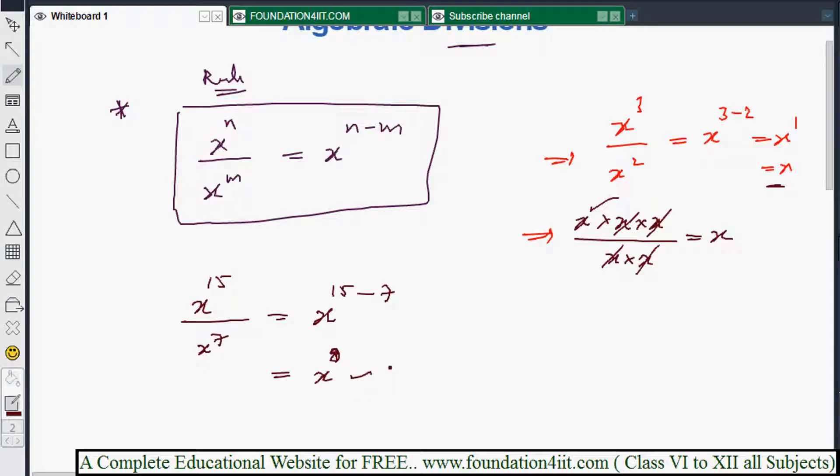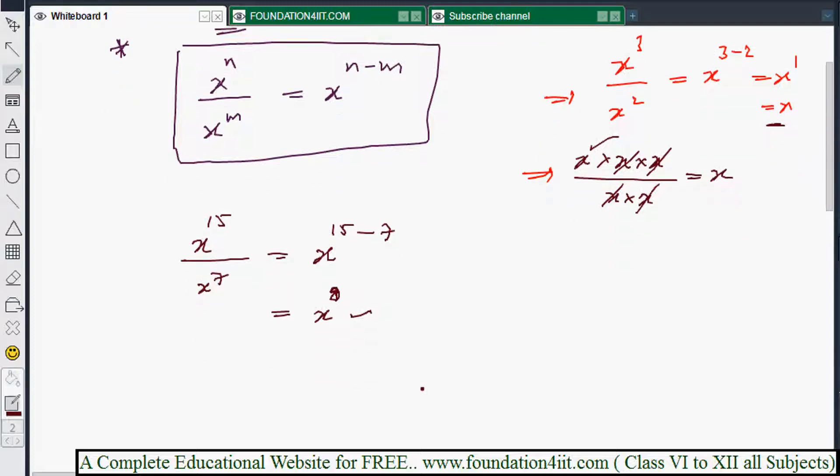Even if the numerator is small or lesser than the denominator, the same process applies. See this example: x to the power 2 by x to the power 3. Then you can write x to the power, numerator power is 2 minus denominator power is 3, so x to the power 2 minus 3, which is x to the power minus 1. x to the power minus 1 you can write as 1 by x.